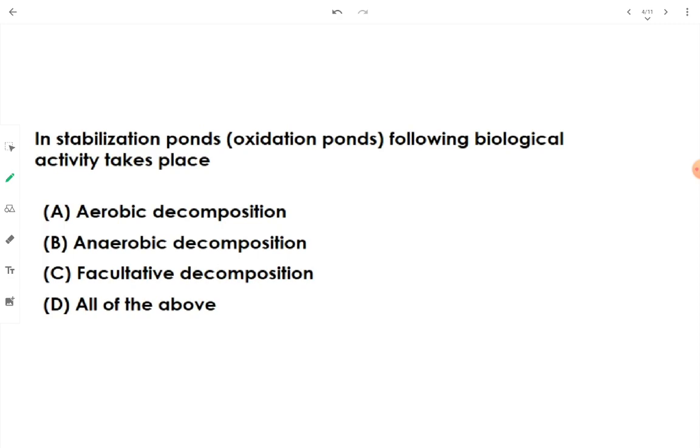In stabilization pond or oxidation pond, the following biological activities take place: aerobic decomposition takes place in the upper layer, anaerobic decomposition takes place at the bottom, and in intermediate layers facultative bacteria can function even in the presence or absence of oxygen. That's why in all three layers - upper layer aerobic, bottom layer anaerobic, and intermediate layer facultative - bacteria are active. That's why we will take option D, all of the above.